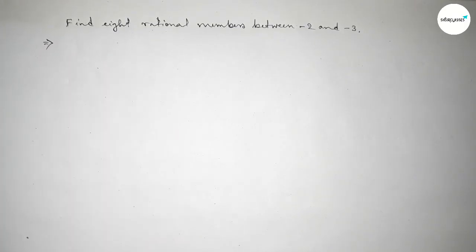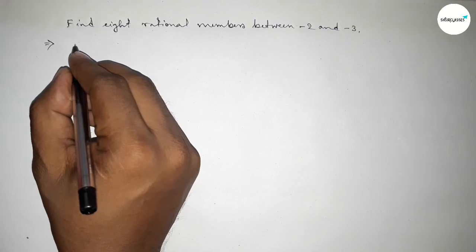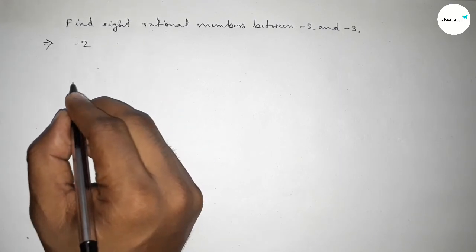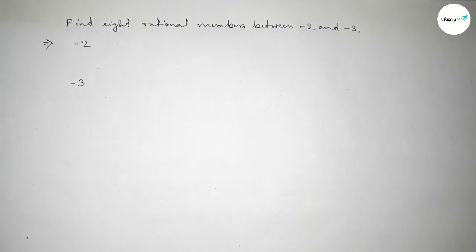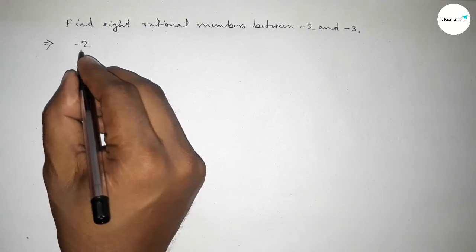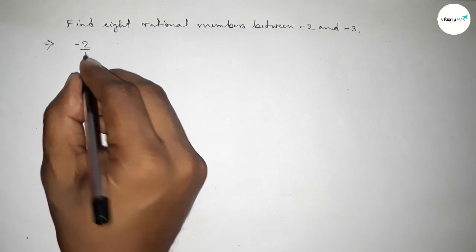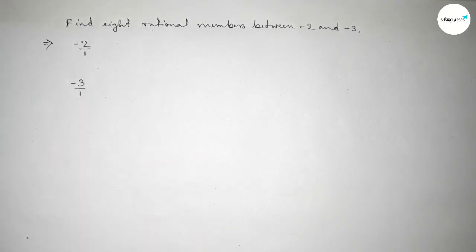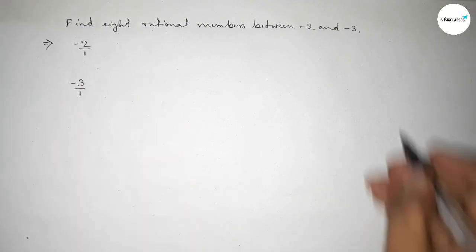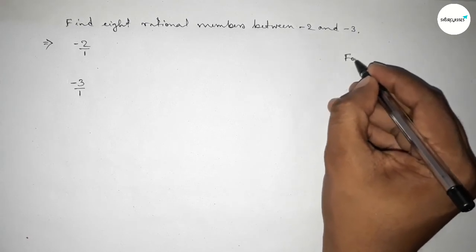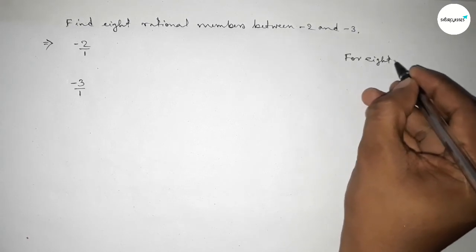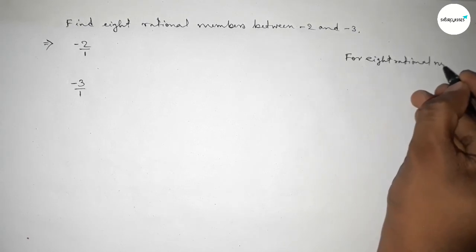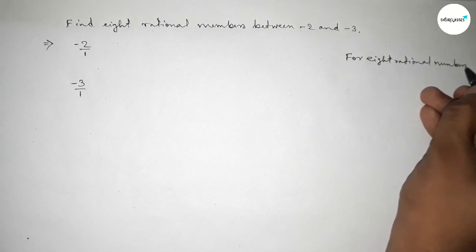The given numbers are minus two and minus three. We can write minus two as minus two over one and minus three over one. Now, discussing here an important method for finding eight rational numbers between any two numbers.